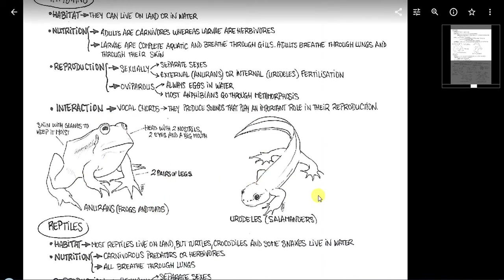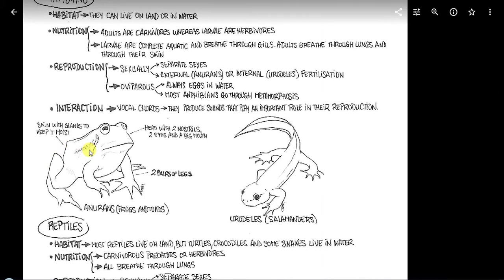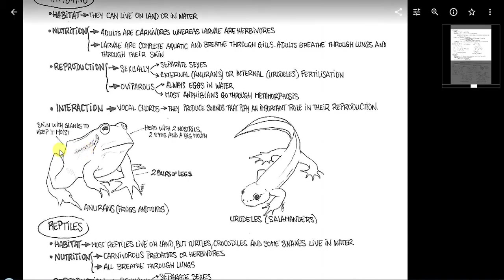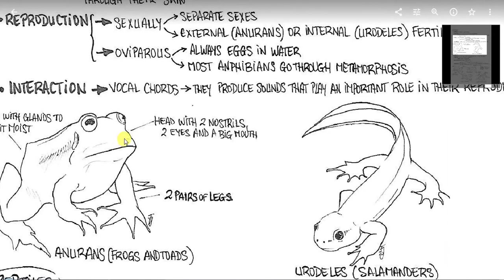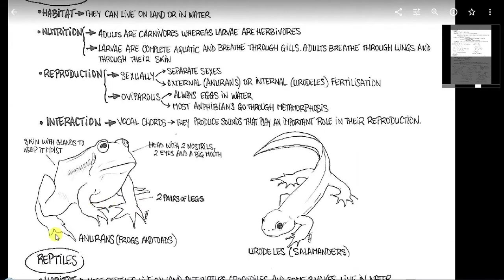Bueno, pues tenemos anuros y urodelos. Aquí tenemos, en este dibujo, que tiene la piel con glándulas, que lo mantiene húmedo. Esas glándulas se crean en una especie de moco, que retiene el agua todo lo posible, y en algunas especies, como las ranas flechas, se agregan también veneno, que lo utilizan las tribus que viven en la selva, untan las puntas de sus flechas en ellas, tienen mucho cuidado de no tocarla porque si no se intoxican ellos, y con eso cazan animales que se quedan atontados. Y vemos que tienen una cabeza con dos narinas, dos ojos y una gran boca, y tienen dos pares de patas.